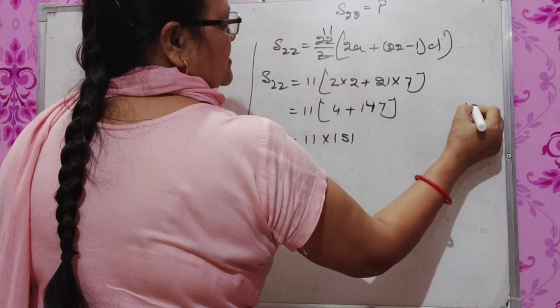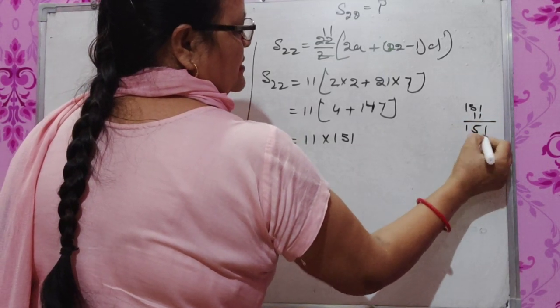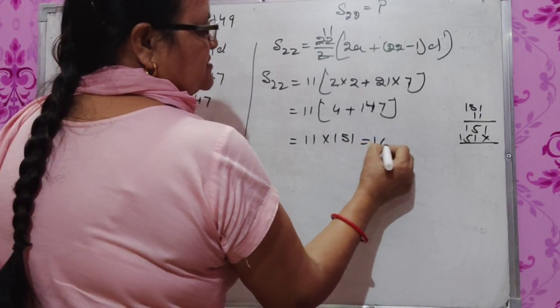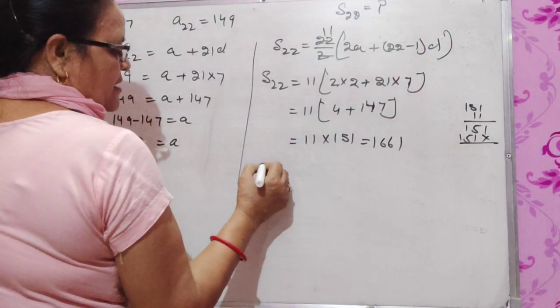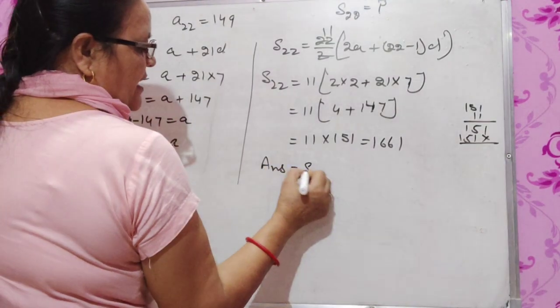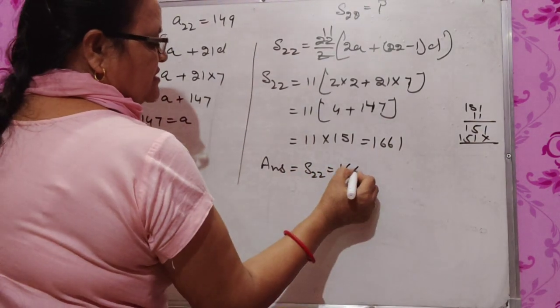Multiplying 151 by 11, we get 1661. Our answer is S_22 equals 1661.